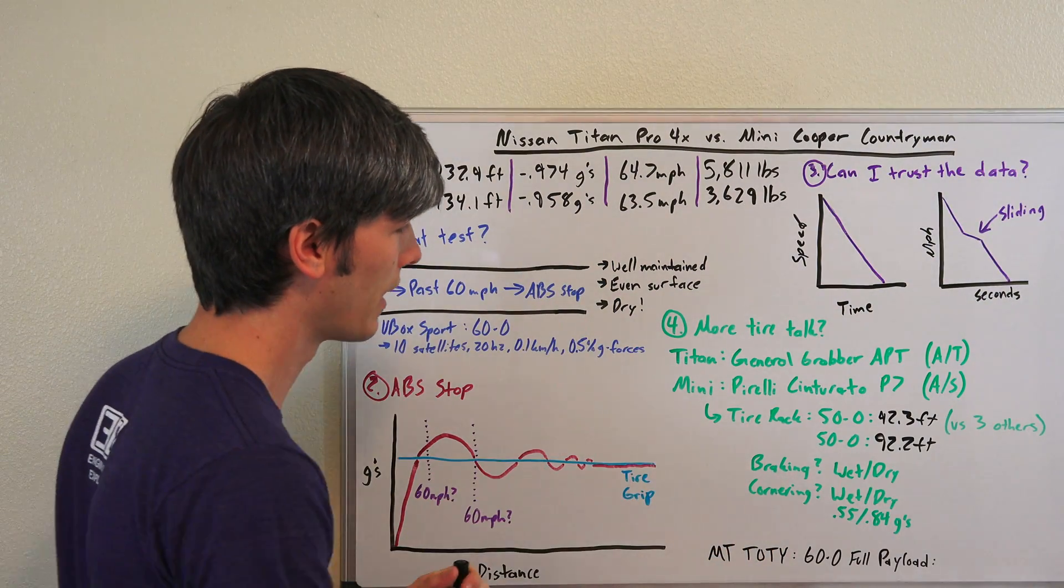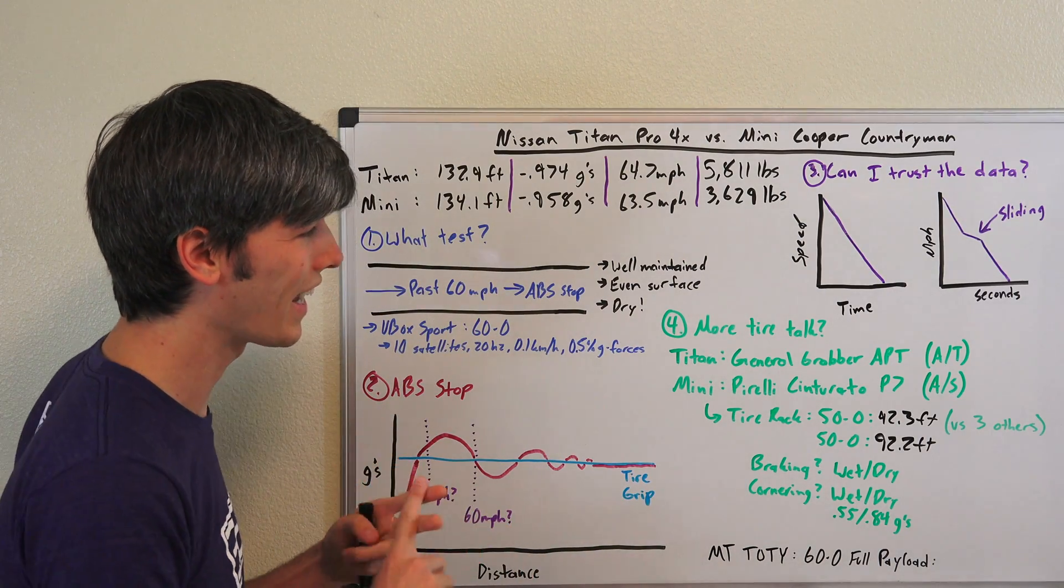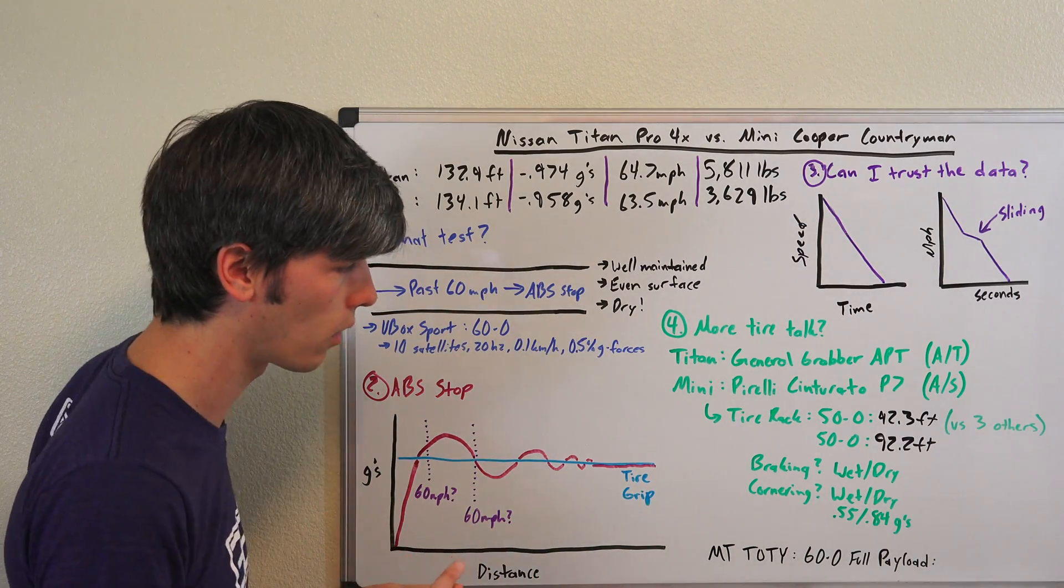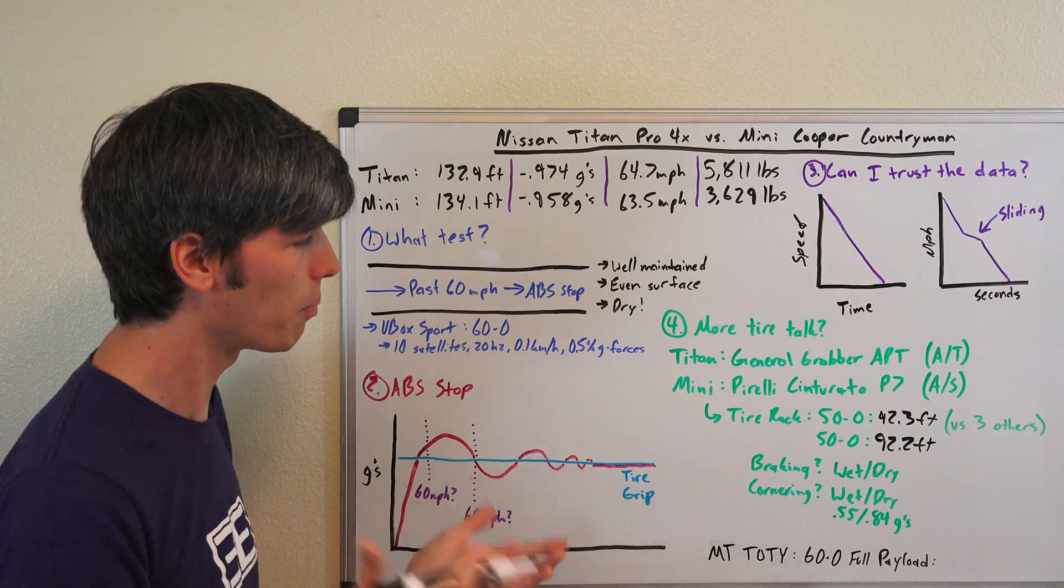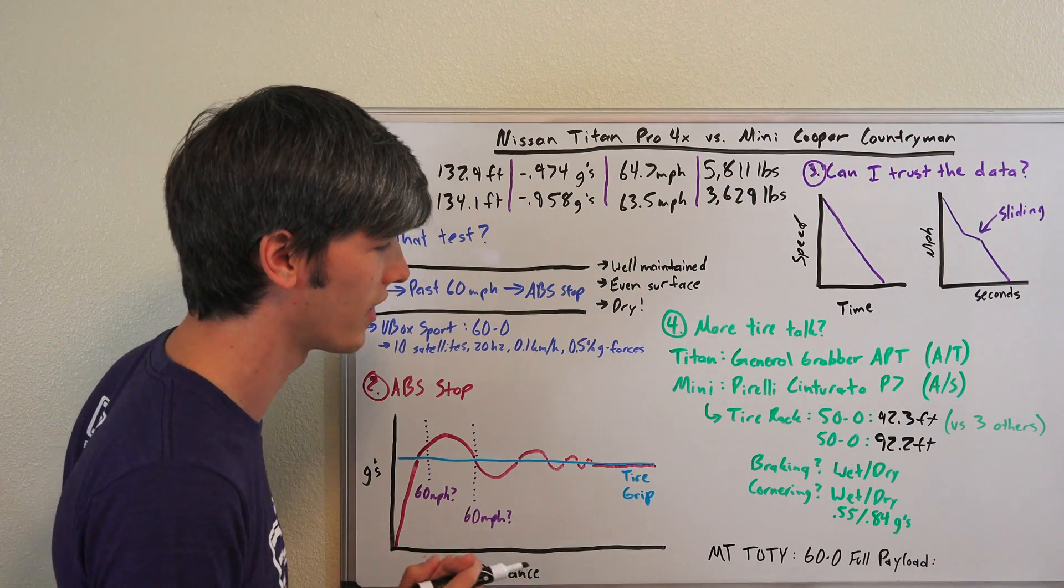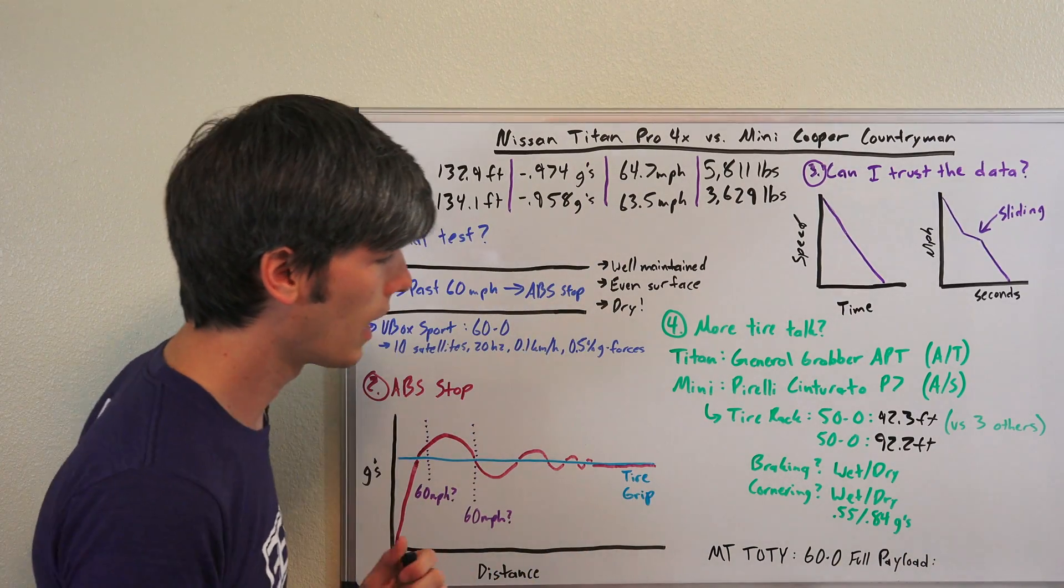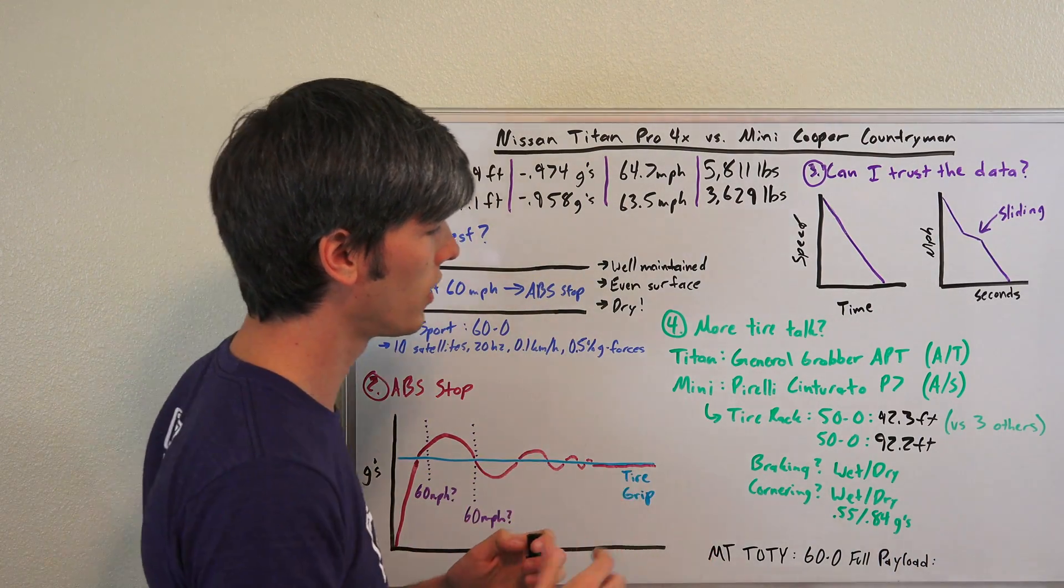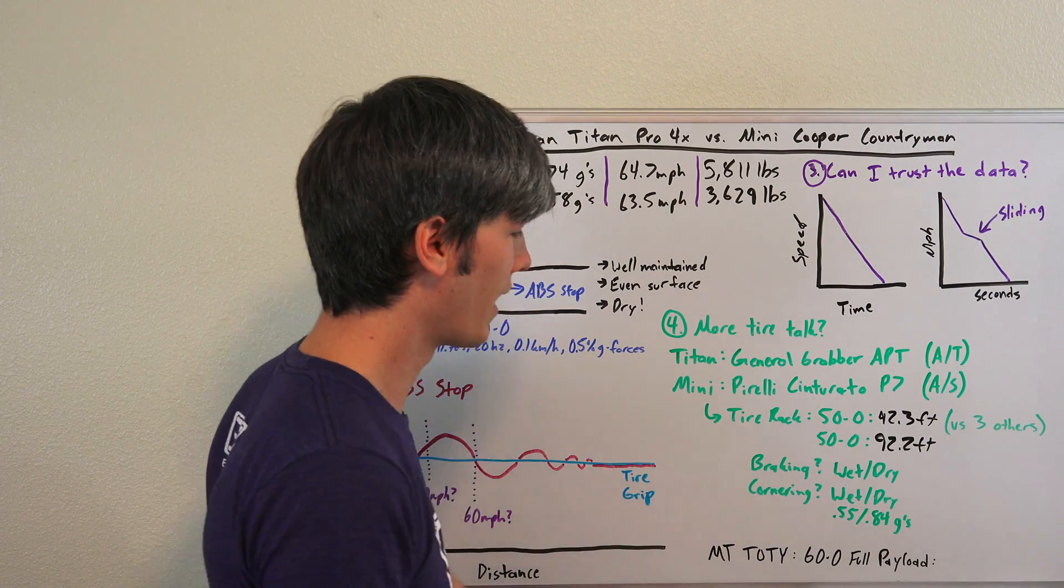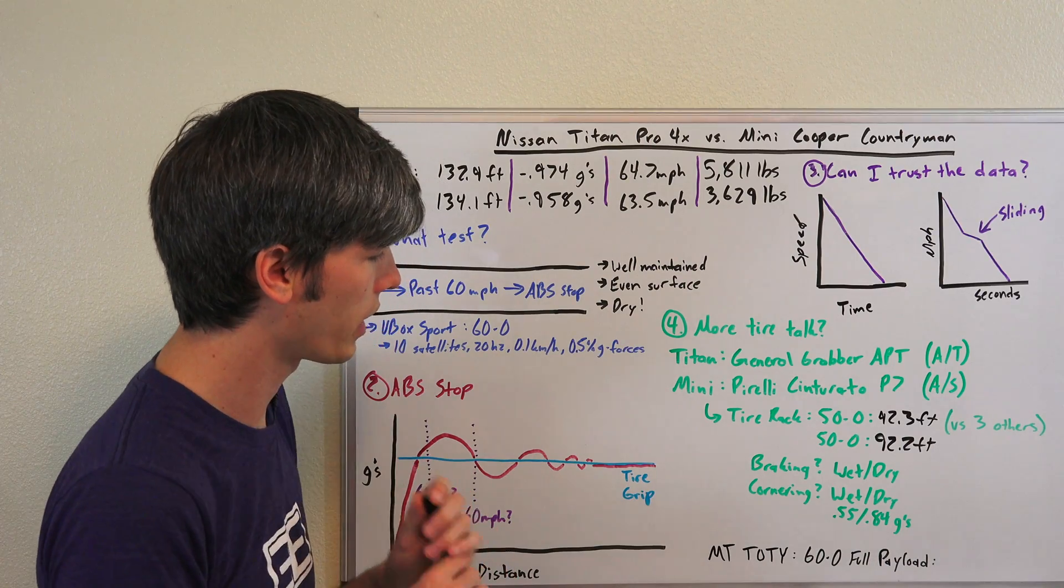What that tells you is that this Pirelli tire honestly isn't that great. Looking at the rest of Tire Rack's data, they were comparing this versus three other tires. Braking both wet and dry, this was the worst of the four. Cornering in the wet, this was the worst. In the dry this was coincidentally the best of all those four tires, so the one thing it had going for it was dry cornering.